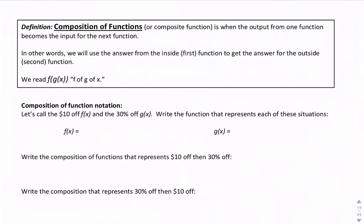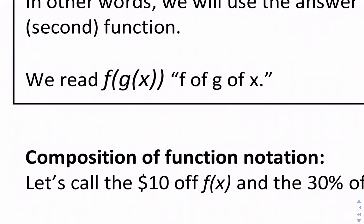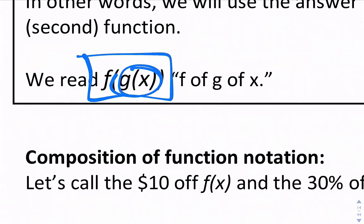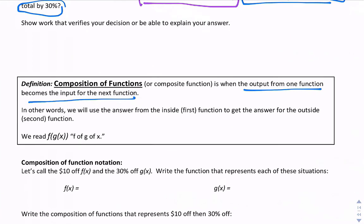Here's the definition: composition of functions, or a composite function, is when the output from one function becomes the input for the next function. In other words, we use the answer from the first function to get the answer for the second function. You'll see it written like f(g(x)) — we do one function first and then the next. Let's turn this Kohl's problem into a composition of functions.